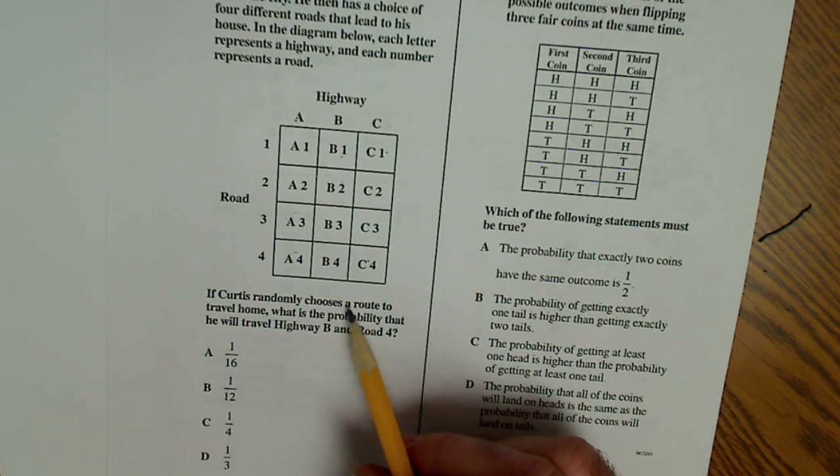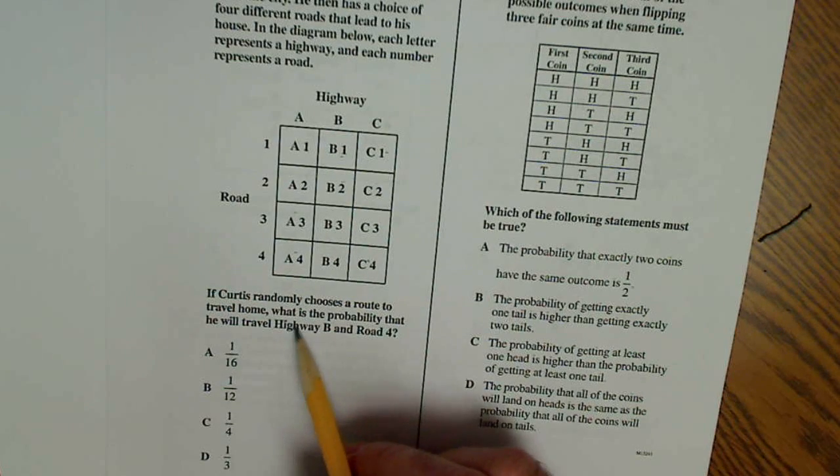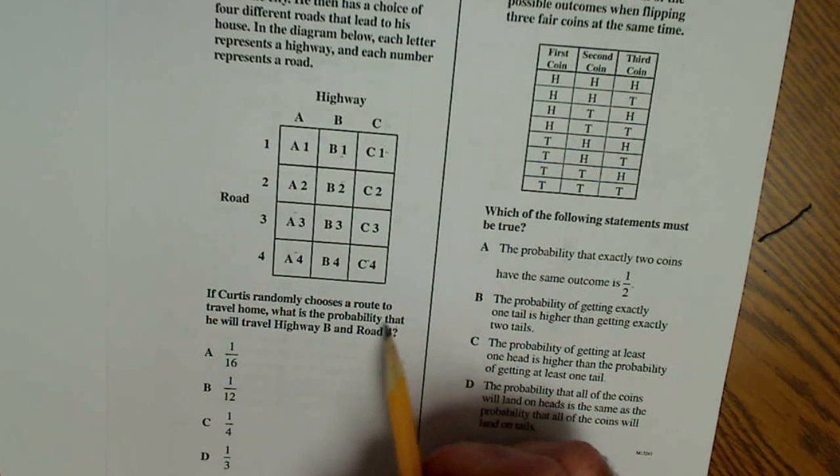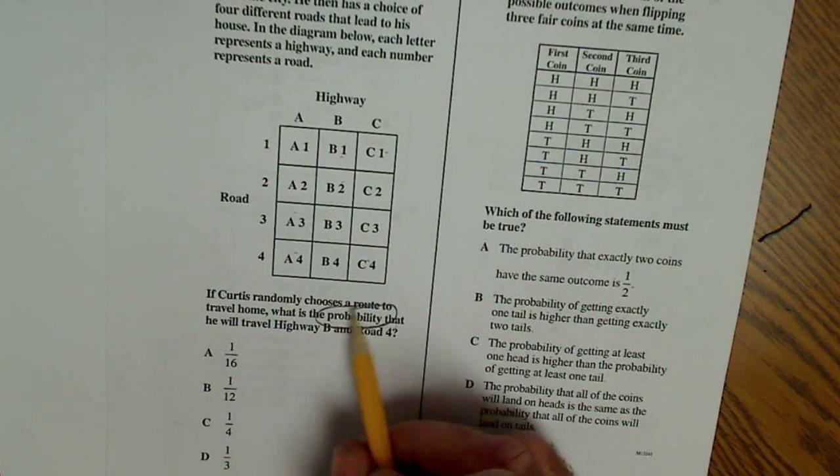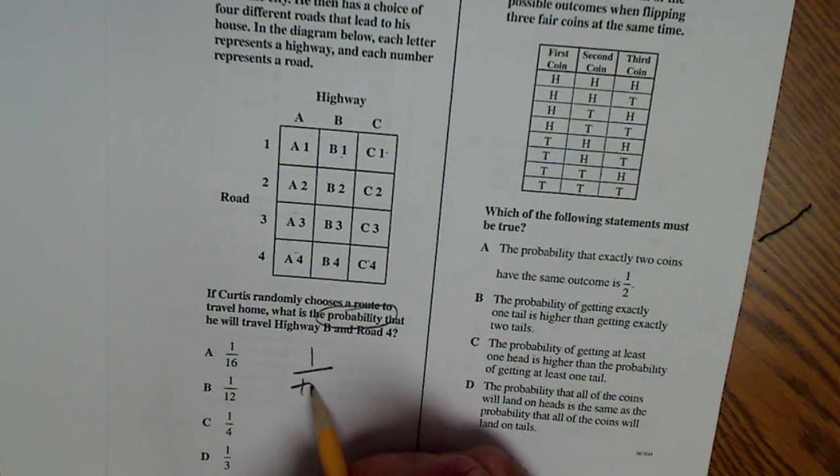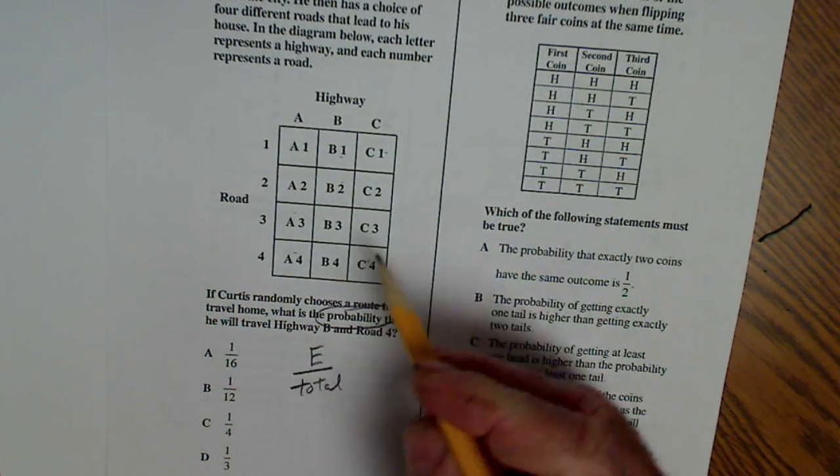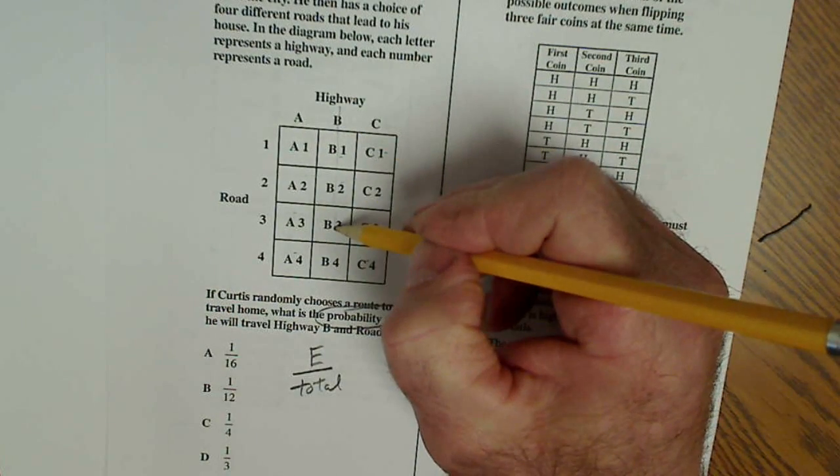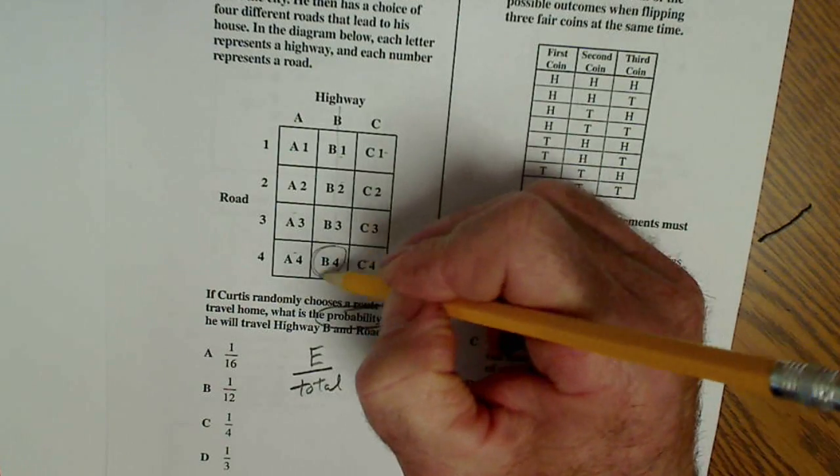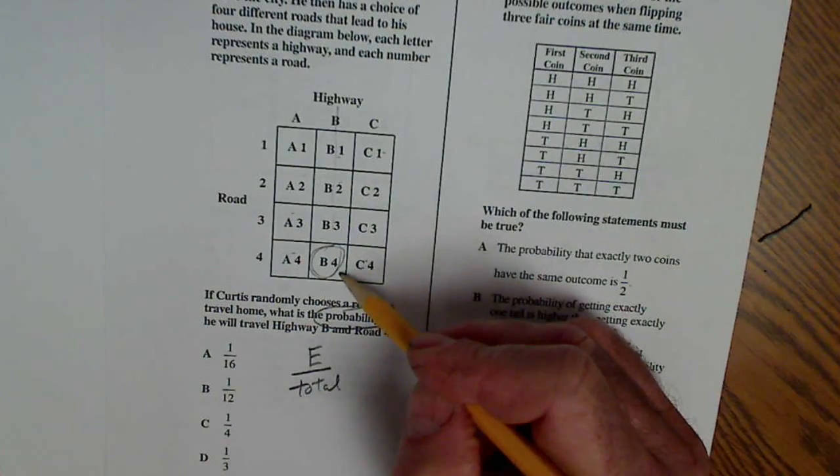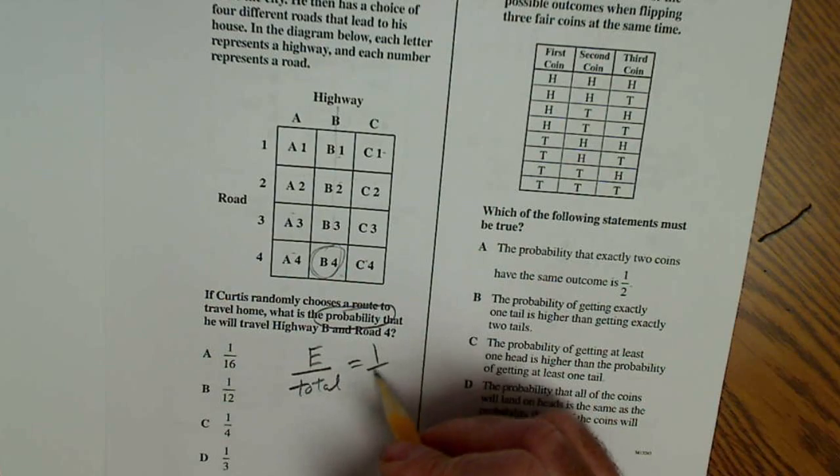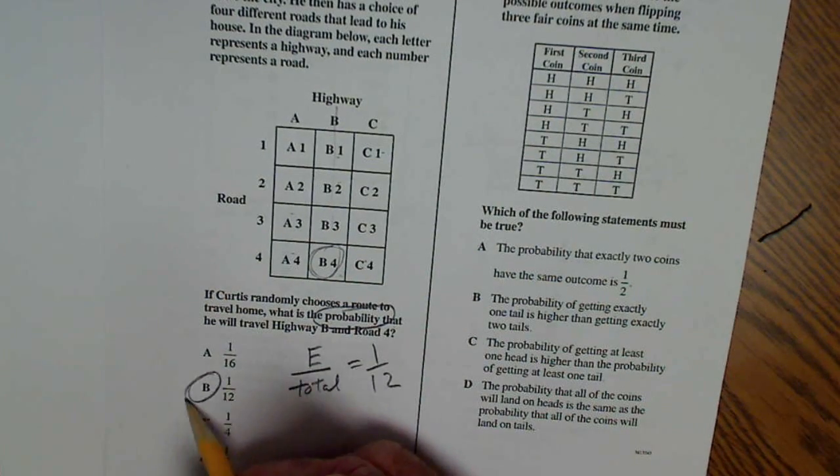If he randomly chooses a route to travel home, what is the probability? So probability is my key word. I know it's going to be the event over the total. The event over the total, that he travels Highway B and Road 4. Well, there's only one way to do that. So it's a total of one out of 12. So answer B.